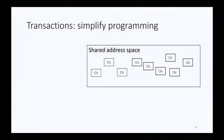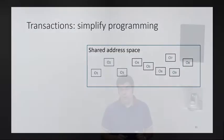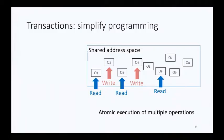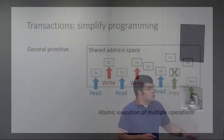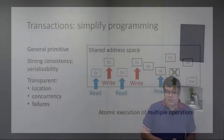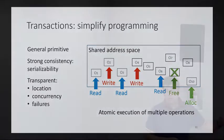Applications can allocate, delete, and manipulate objects in this shared address space. The exposed primitive is transactions — we basically expect programmers to write entire applications using transactions. Transactions enable atomic execution of multiple operations: reads and writes of objects, and allocation and freeing of objects in the shared address space. We support very strong consistency — serializability — which simplifies reasoning about the system. Using transactions makes programming much simpler: location of objects is transparent, concurrency in this highly concurrent system is transparent, and failures are transparent.